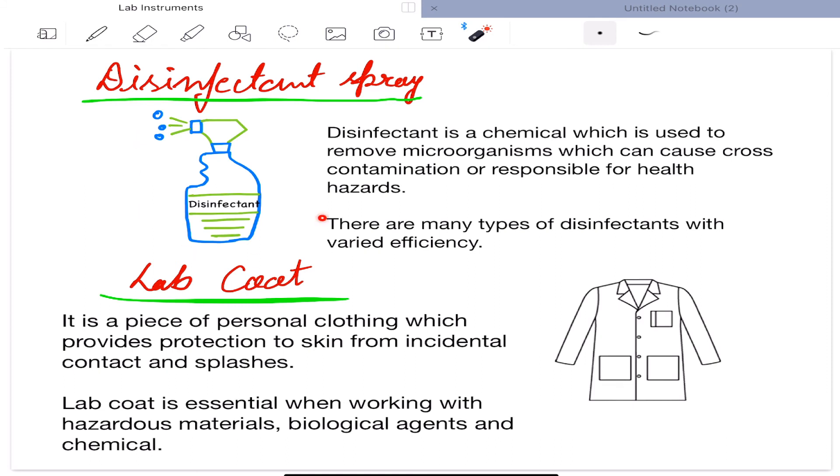Next is disinfectant spray. It is very important. Disinfectant is a chemical which is used to remove microorganisms which can cause cross-contamination or are responsible for health hazards. There are many types of disinfectants with varied efficiency. Now lab coat. It is a piece of personal clothing which provides protection to skin from incidental contact and splashes. Lab coat is essential when working with hazardous materials, biological agents, and chemicals.